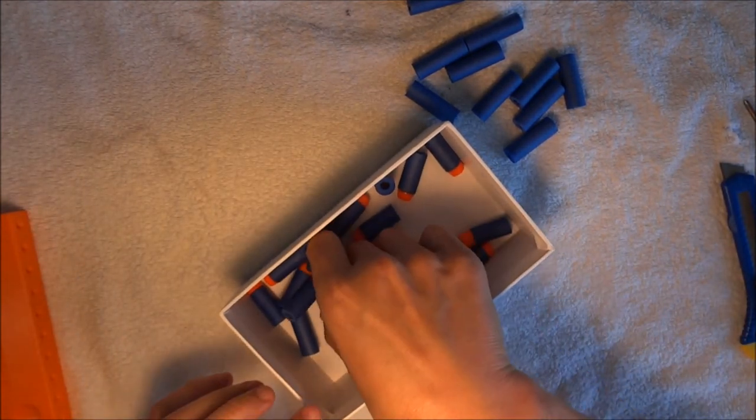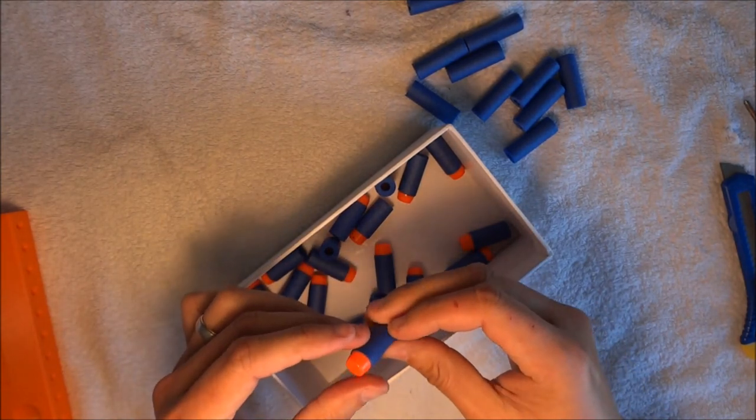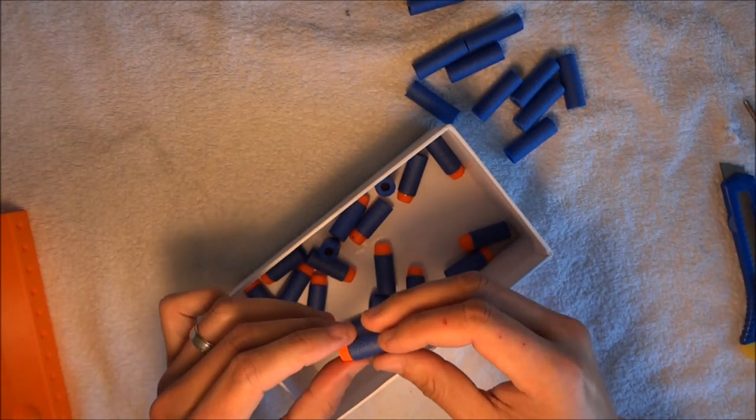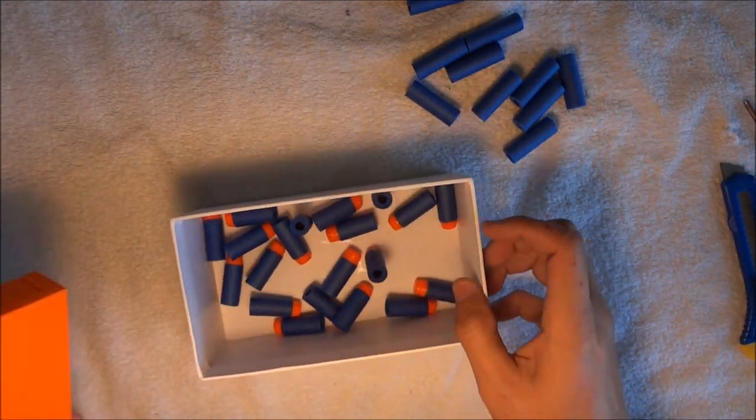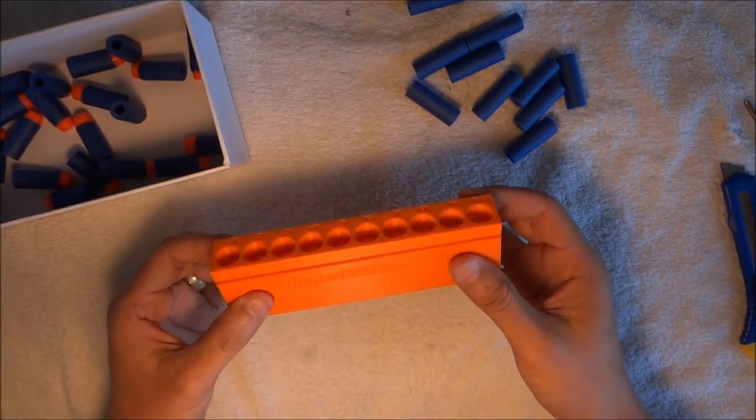So there you go. So that's your half length FVJ, or you can use elites, or whatever dart with similar diameter, to fit into the short dart cutter.